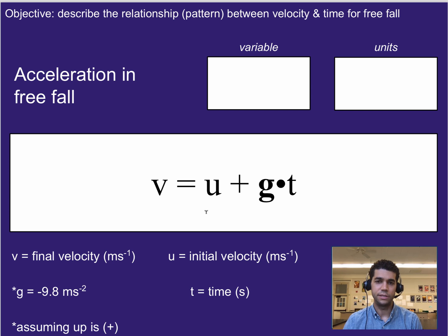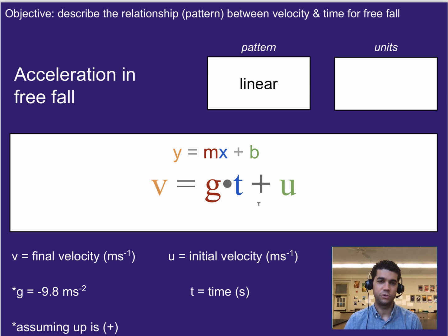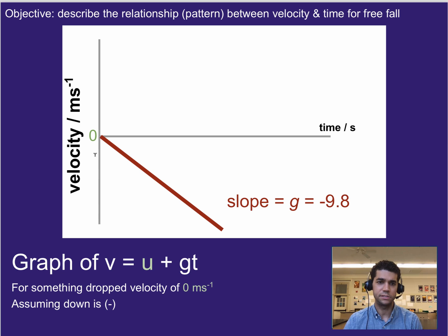Another thing to note is that we can also rewrite this equation. You might already be able to tell what pattern it is. But if we reorient it, so just flipping the u around and putting the g and t up front, we can see that this matches the form of y equals mx plus b, where our slope is going to be g, time is our x value, and b is our initial velocity. So what that means is basically anytime you do a graph of velocity versus time for something in free fall, the slope comes out to 9.8 meters per second squared.